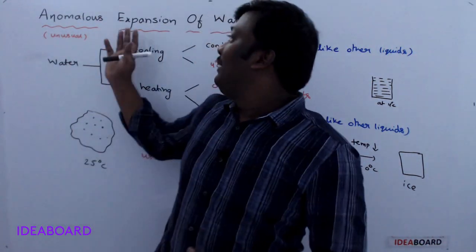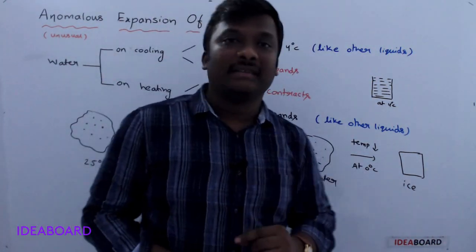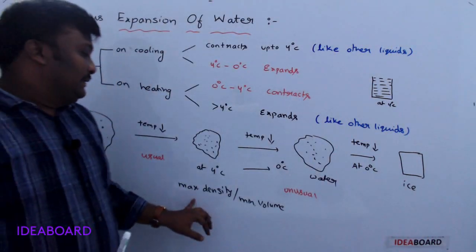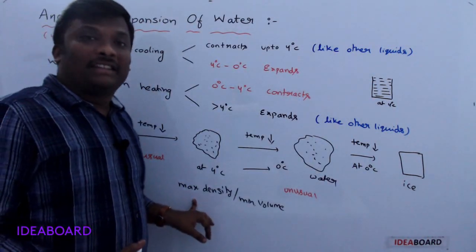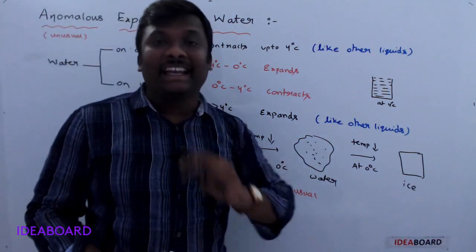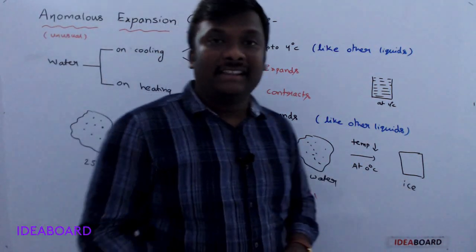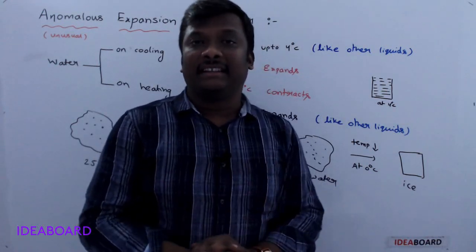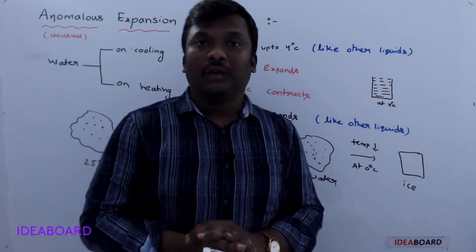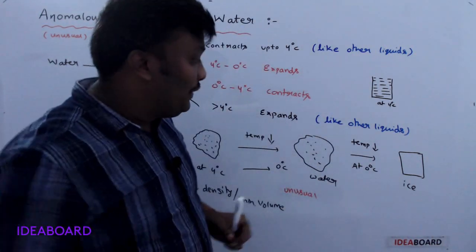Now, the consequences of anomalous expansion of water. The first consequence is that at 4 degrees Celsius water has maximum density or minimum volume. The second consequence is that the density of ice is lesser than the density of water, which is also an unusual thing.